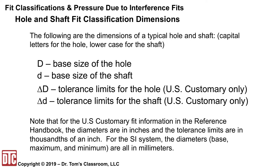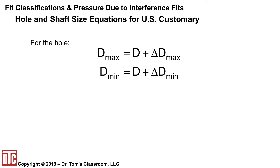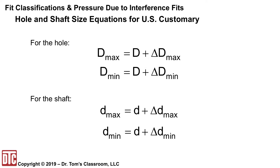For US customary fit information, the diameters are in inches and the tolerance limits are in thousandths of an inch — you have to be careful there. For the SI system, the diameters — the base, maximum, and minimum — are all in millimeters. For the hole, the maximum diameter is the nominal D plus delta D max, and the minimum is the nominal D plus delta D min. Similarly for the shaft, d max equals nominal d plus delta d max, and d min equals nominal d plus delta d min.